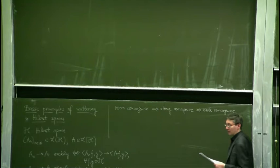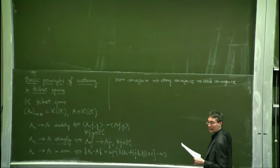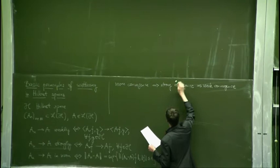Considering these three notions of convergence, we have the following chain of implications: norm convergence implies strong convergence, and strong convergence implies weak convergence. For the purposes of scattering theory, strong convergence is actually what we will need.